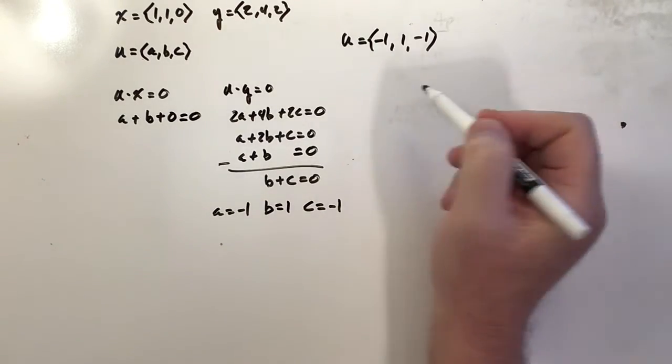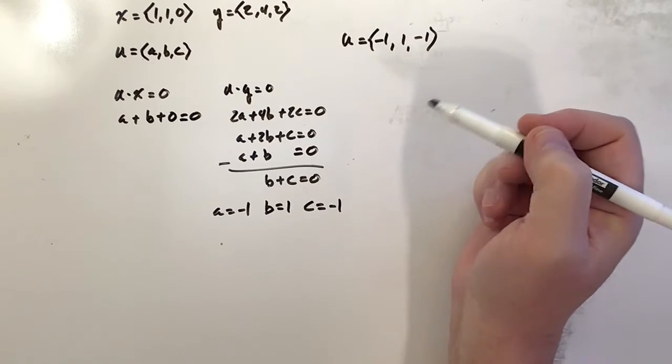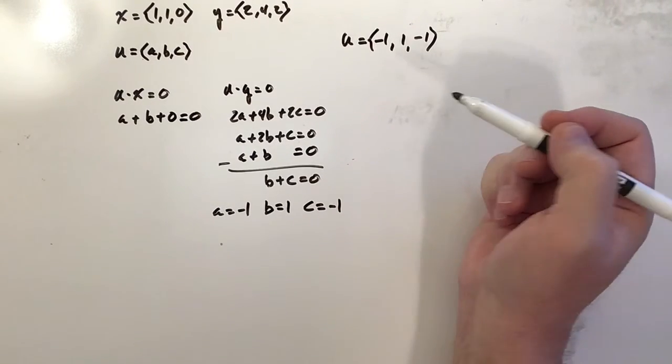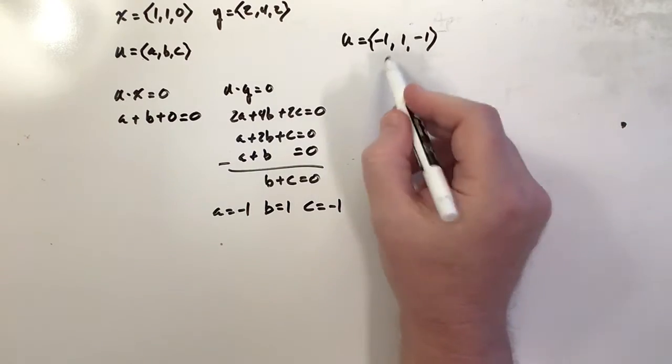There's only one problem, which doesn't make this the solution to the problem, and that is the magnitude of this vector is not 1. And we were asked to find a unit vector. Remember, a unit vector not only points in a particular direction—in this case having these direction numbers—but it also has to have a magnitude of 1.